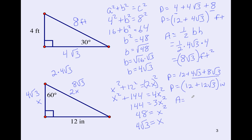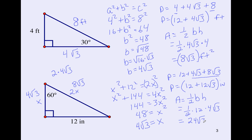The area is one half base times height: one half of 12 times 4√3. Outside numbers multiply — one half of 12 is 6, and 6 times 4 is 24. Numbers inside the radicals: there's only one, so the area is 24√3 inches squared.